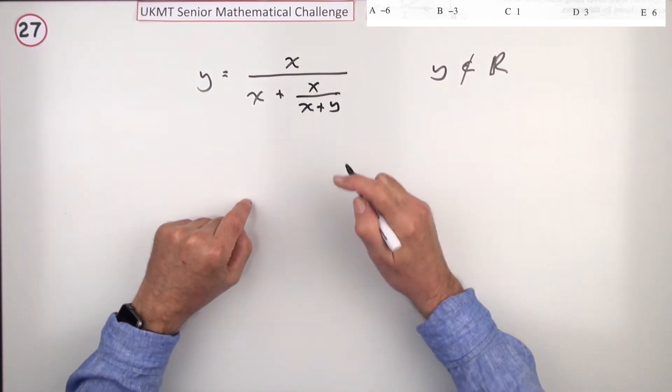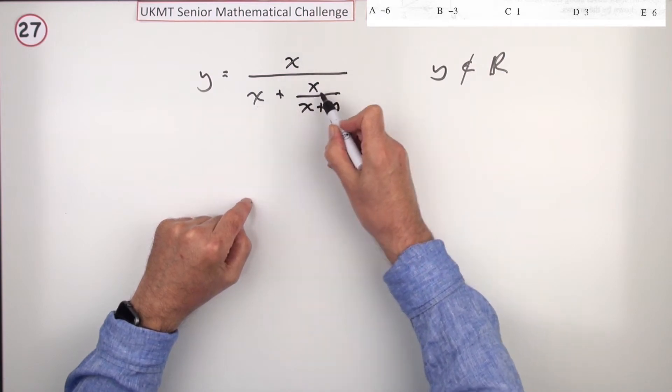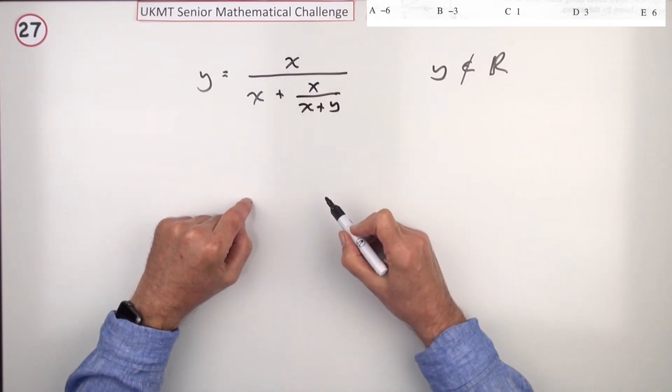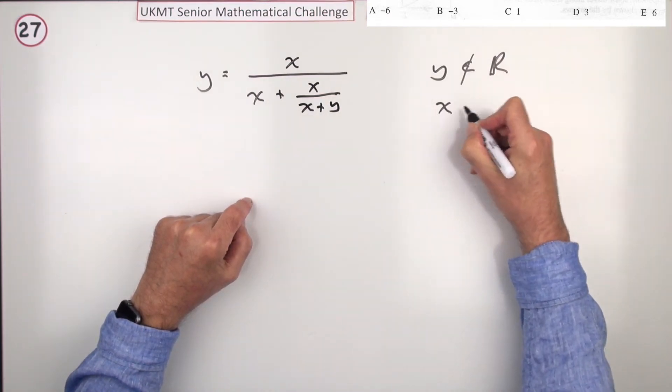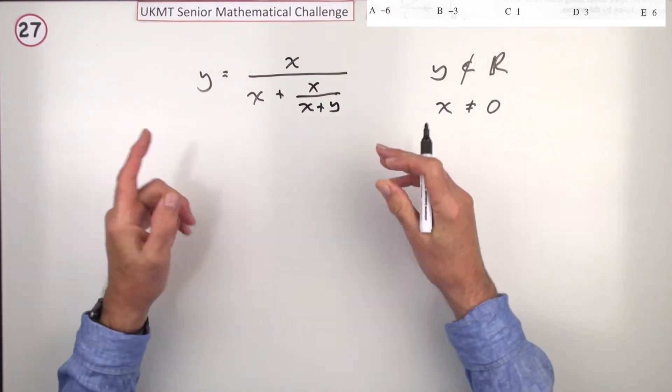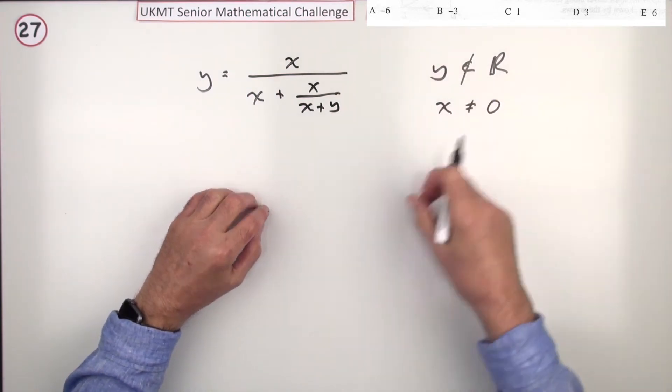Now, the first thing you notice is, if x was 0, with 0s in the denominator here, then y wouldn't be real. So, I can straight away say x isn't equal to 0, but it's not an answer, because it's not one of those 5.